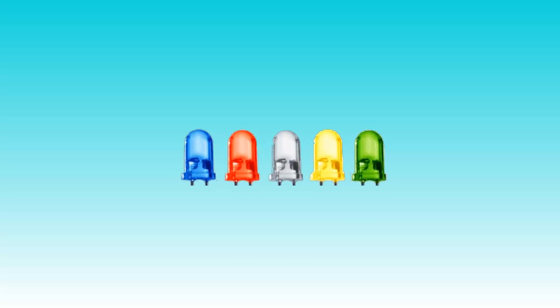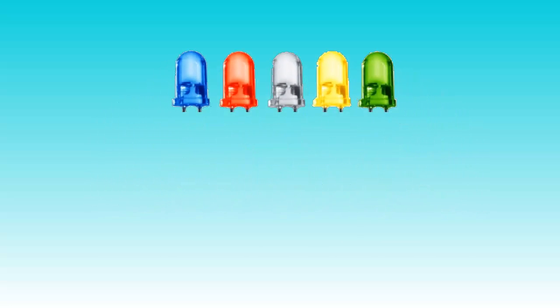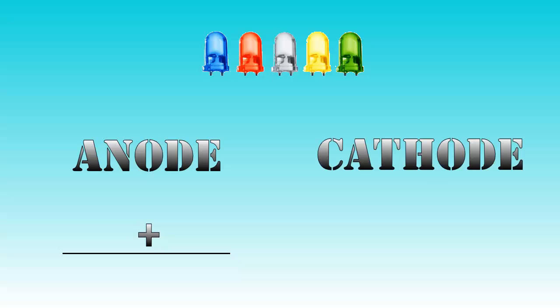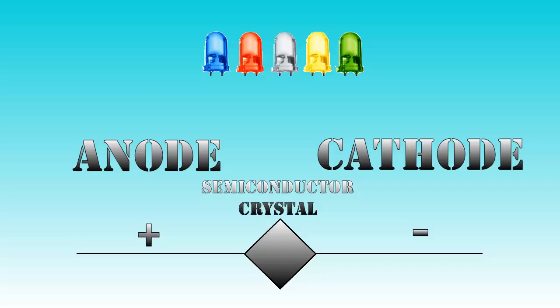An LED consists of three components: an anode, the positive wire, a cathode, the negative wire, and a semiconductor crystal in between them.